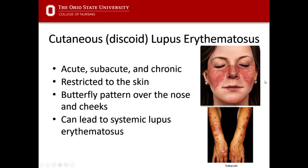Other conditions like rosacea can also mimic a butterfly rash across the face, but if a person has generalized symptoms and this rash, a clinician may test for lupus to rule it out early. Cutaneous lupus can be acute, subacute, or chronic, and is restricted to the skin, but it can progress to systemic lupus, affecting internal organs. There are also other lesions in areas of the body outside the face with cutaneous lupus.